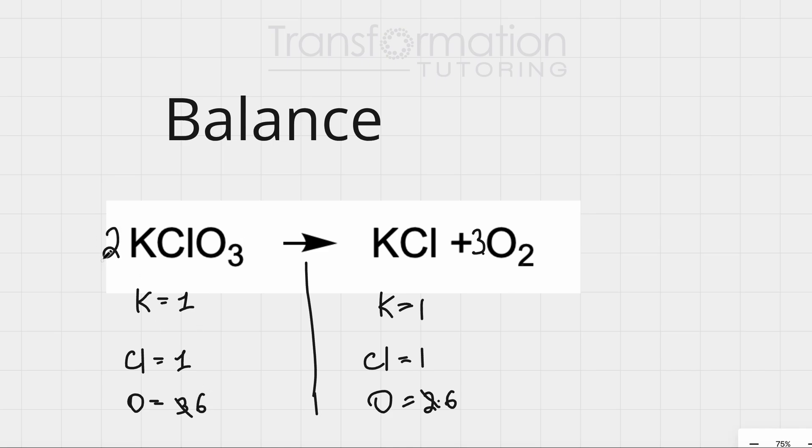However, because I added a 2 here, the number of K atoms and Cl atoms changed as well. The coefficient gets distributed throughout the molecule, so the compound. So, how many potassium atoms do we have? How many K? So, now we have 2 because 2 times 1 is 2. And what about Cl? We have 2 as well.